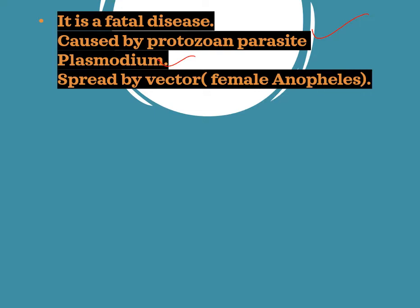Malaria is spread by a vector, and the name of the vector is the female Anopheles mosquito. The reason it is female and not male is because males generally suck nectar, not blood. Females need blood for laying their eggs, because blood has more nutrition and females require more nutrition for egg-laying. This is why female Anopheles mosquitoes suck blood, while males suck nectar from flowers.